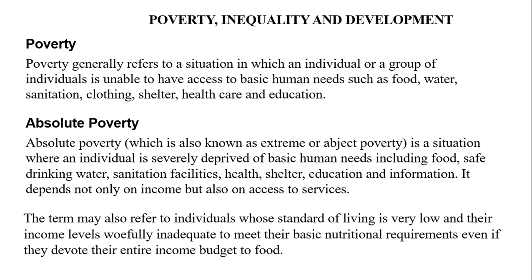The first we would want to look at is absolute poverty. Absolute poverty is sometimes known as extreme poverty or abject poverty. It is a situation where an individual is severely deprived of basic needs such as food, safe drinking water, sanitation facilities, health, shelter, education, and also information. It depends not only on income but also access to services.